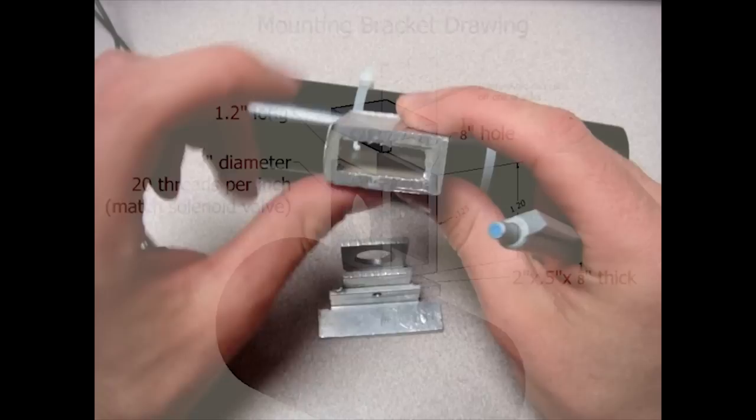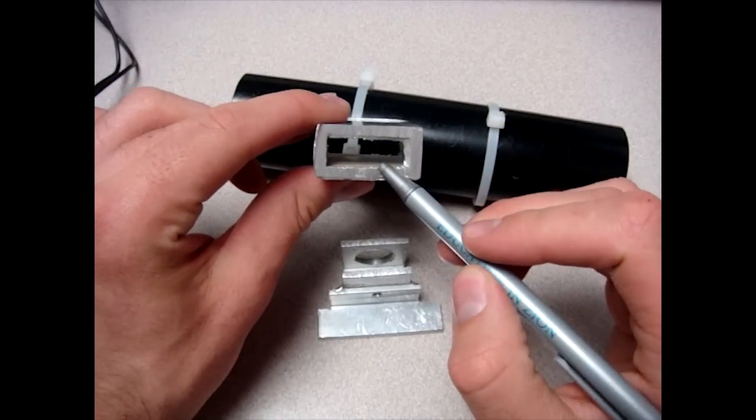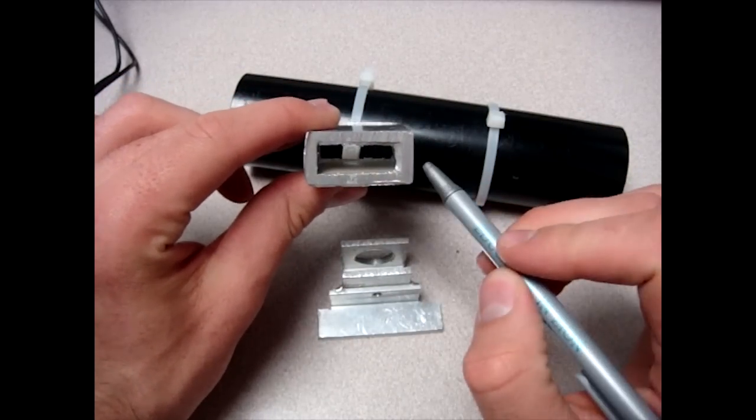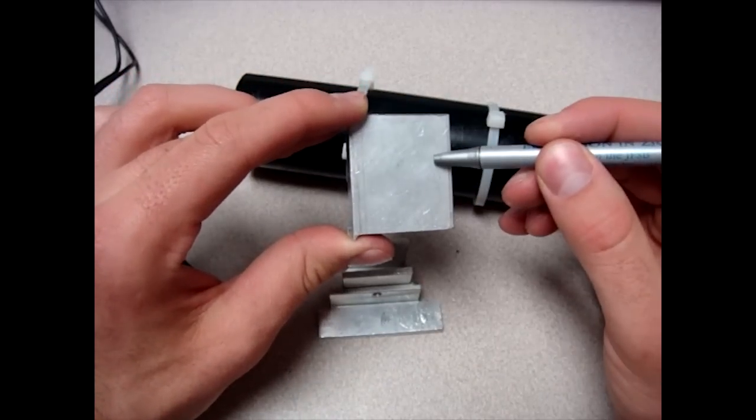You will begin with a piece of aluminum tubing that is three quarters of an inch tall. It doesn't really matter how wide it is. You will want to cut the length to about an inch and a half.